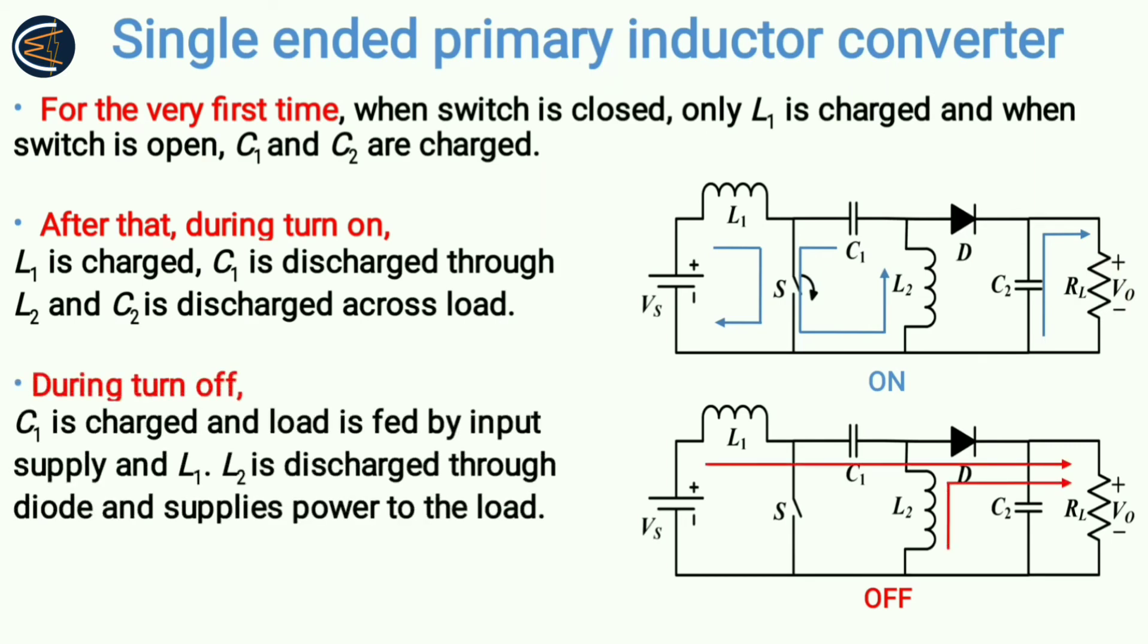After the turn off, that means when the switch is off, what will happen? C1 is charged again. See here, C1 will be charged by both input supply and inductor L1. This L1 will be discharging now. By this process, C1 will be charged and also the power will be supplied to the load. Not only that, L2 is discharged through diode and supplies power to the load. See here, initially L2 had some current flowing in that direction, so it will maintain the same direction. This is how through diode L2 will discharge and supply the power to the load. So this is the overall working principle of SEPIC or single ended primary inductor converter.